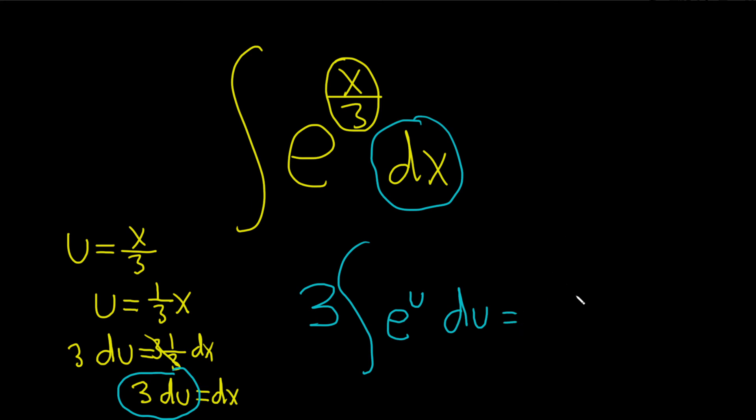When you integrate e to the u, you get e to the u. So this is 3 e to the u plus c.